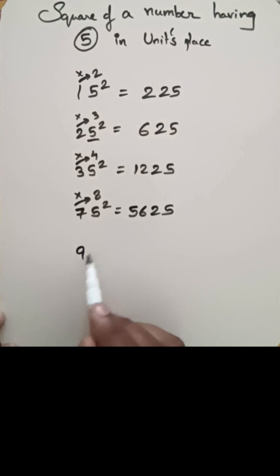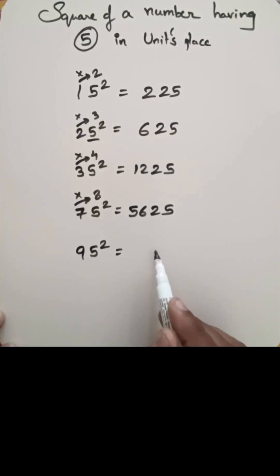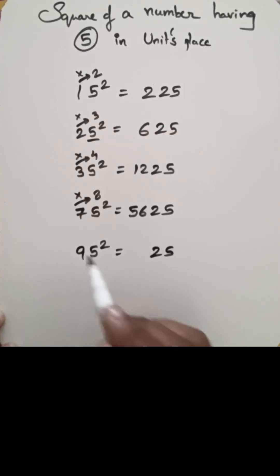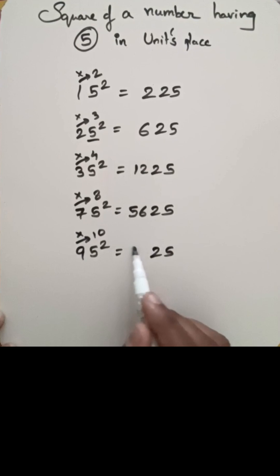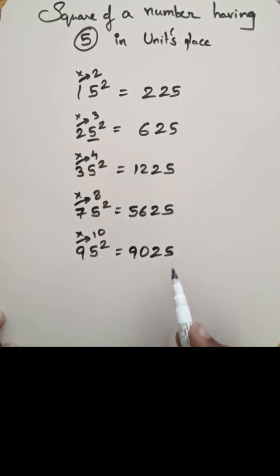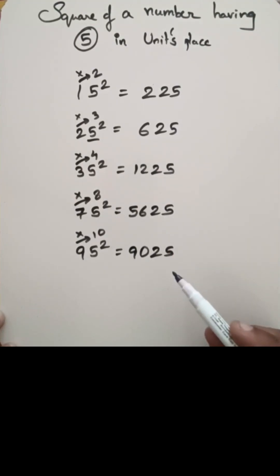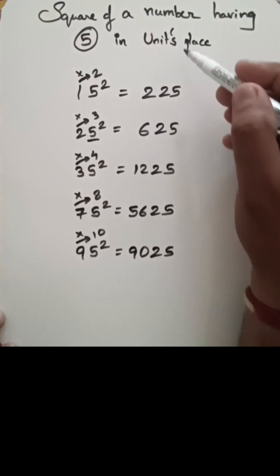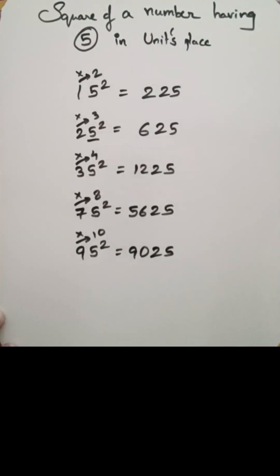Let us go with 95 square. 5 square is 25, and 9 — after we have 10, so 9 into 10 is nothing but 90. So 95 square is 9025. In this way you can find the squares of numbers which contain 5 in the units place. Thank you friends.